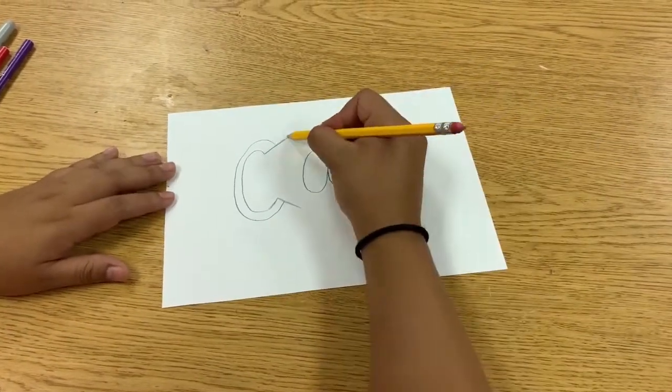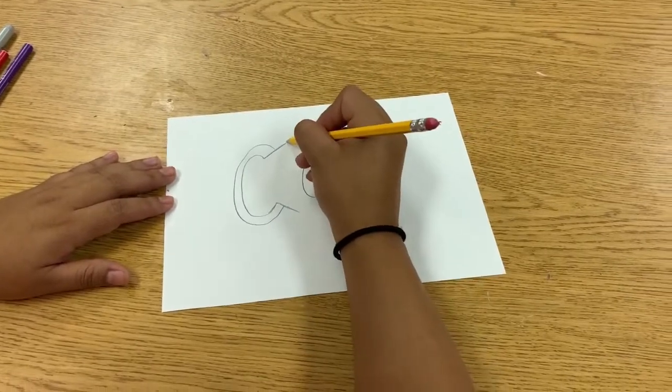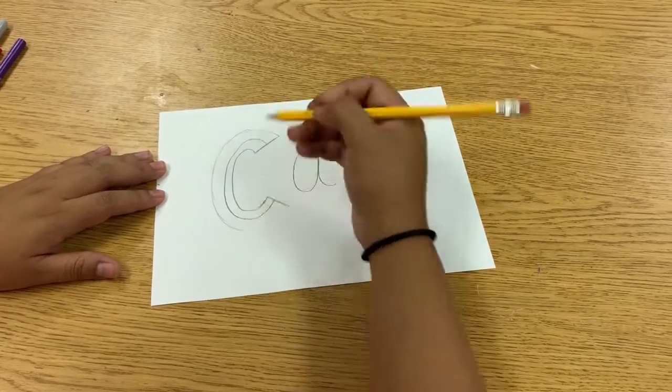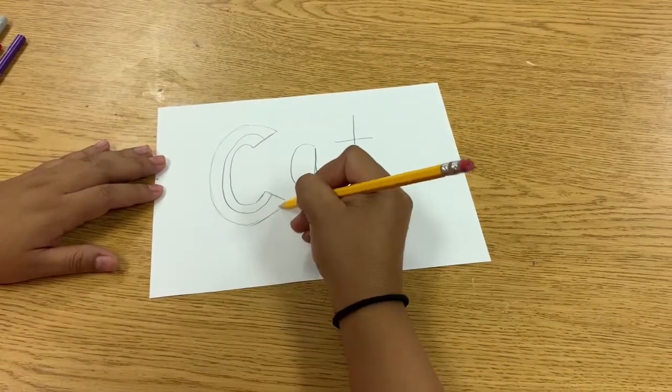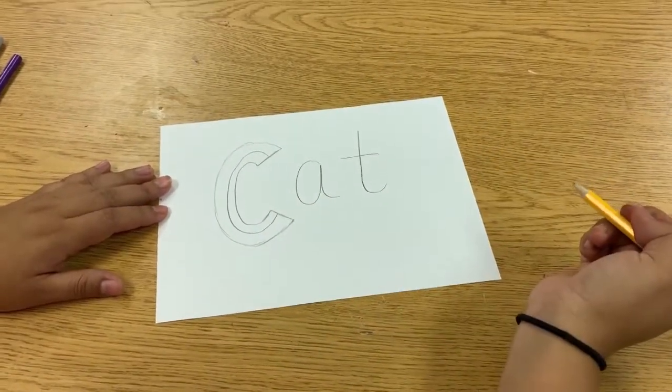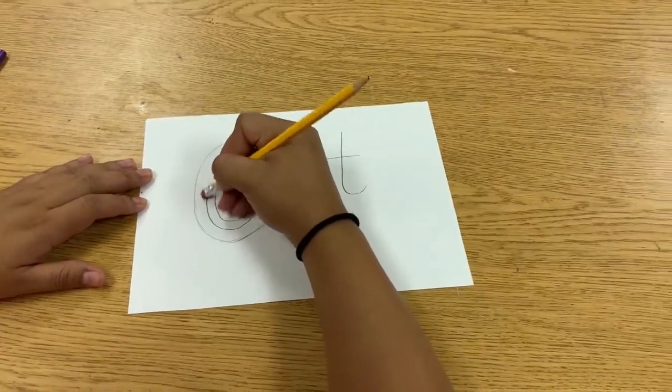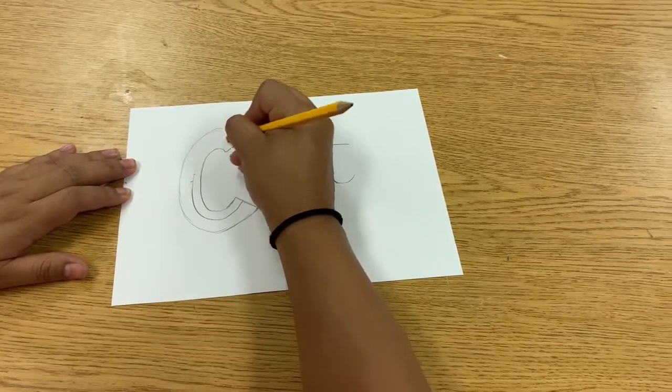Then I'm going to do the same thing on the outside of my letter, bringing it all the way around to meet the bottom part. Once you have this, you can erase that first line that you made when you were writing your name.